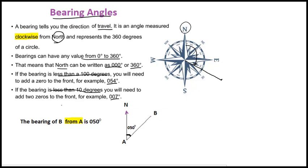For example, 007 degrees. So how to draw the bearing angle of B from A at 50 degrees: from A, you draw the angle at A. First, at A, you draw the north direction. Then you draw the angle clockwise from north — this is 50 degrees. That's the bearing angle of B from A.